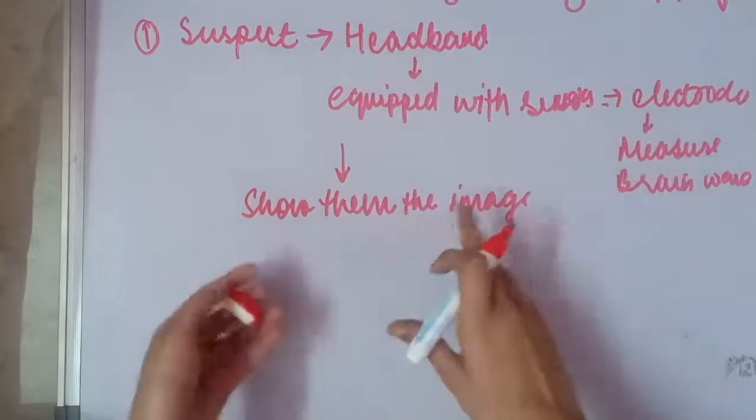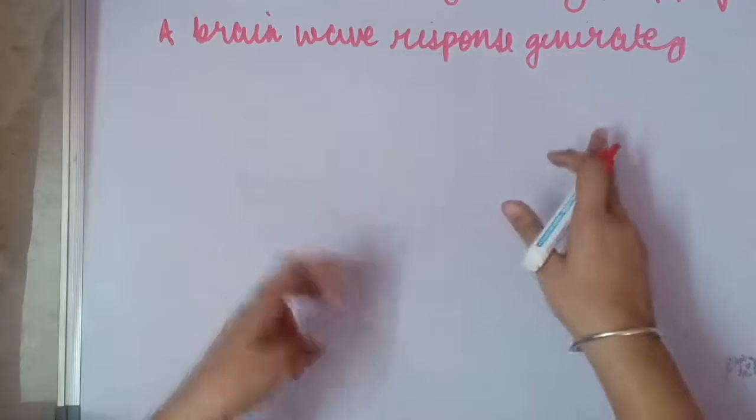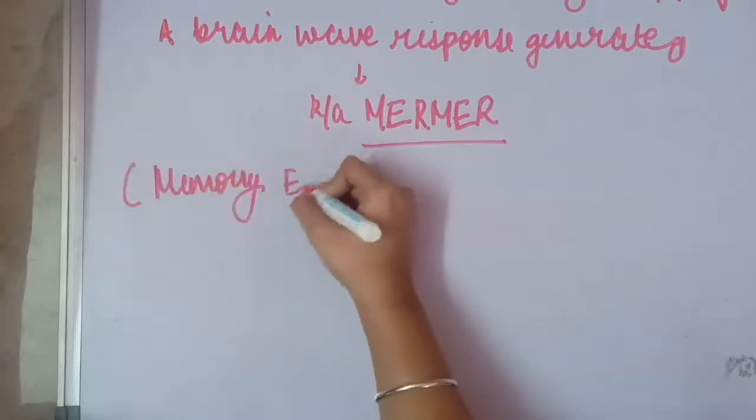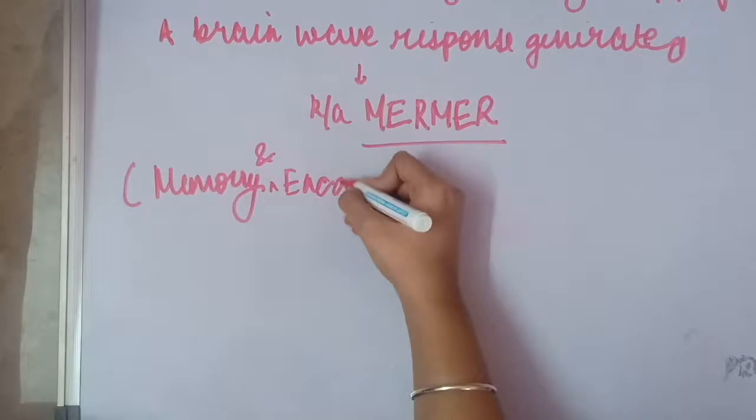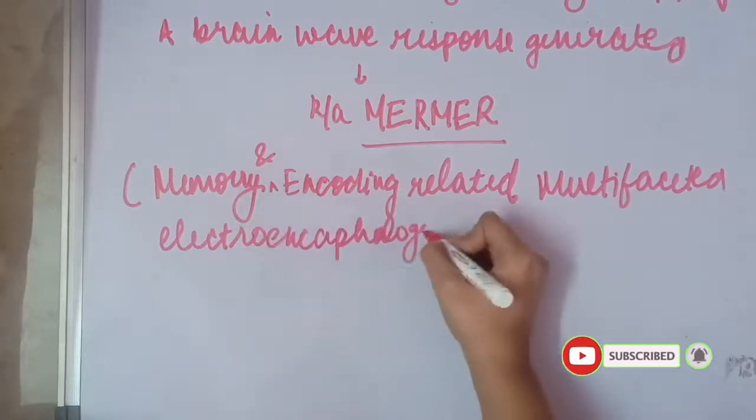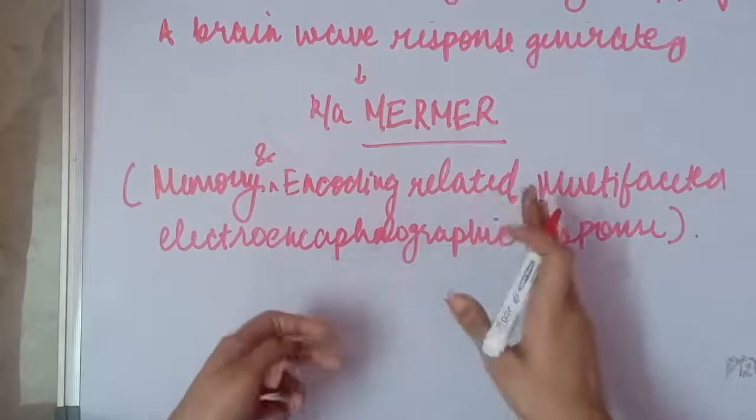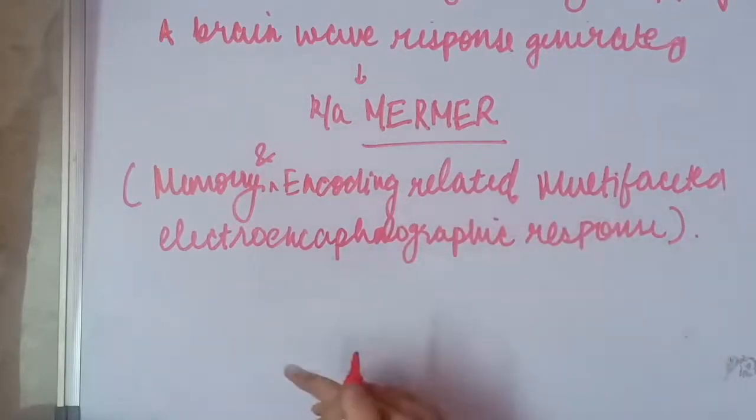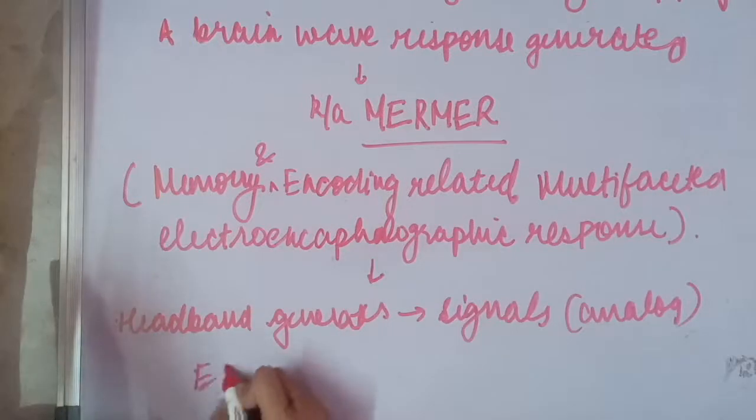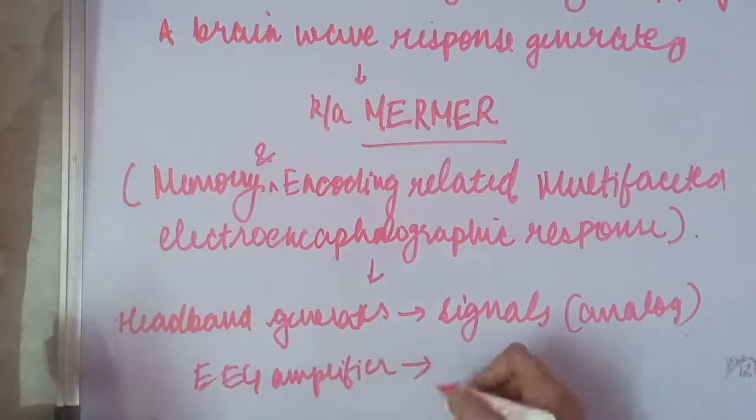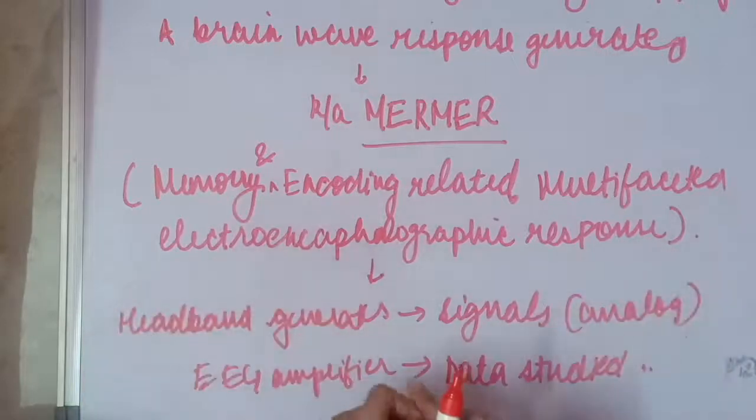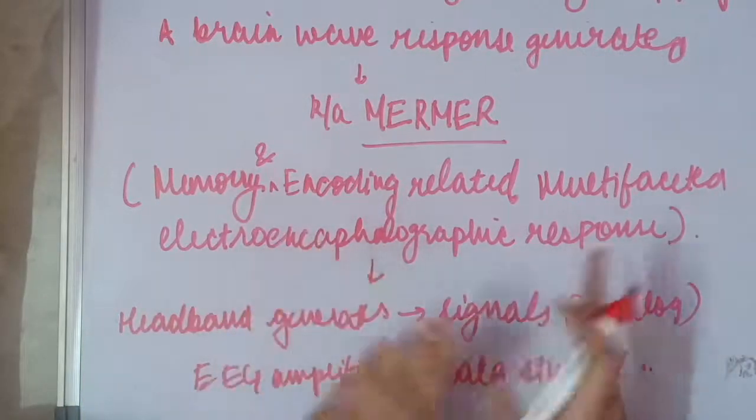A brain wave response is generated which is known as MURMUR. Its full form is Memory and Encoding Related Multifaceted Electroencephalographic Response. The MURMUR in turn contains the brain response known as P300 that we talked about. The headband generates analog signals and we use an EEG amplifier whose data we will study. This test doesn't take much time, around 10 minutes we can complete the test.